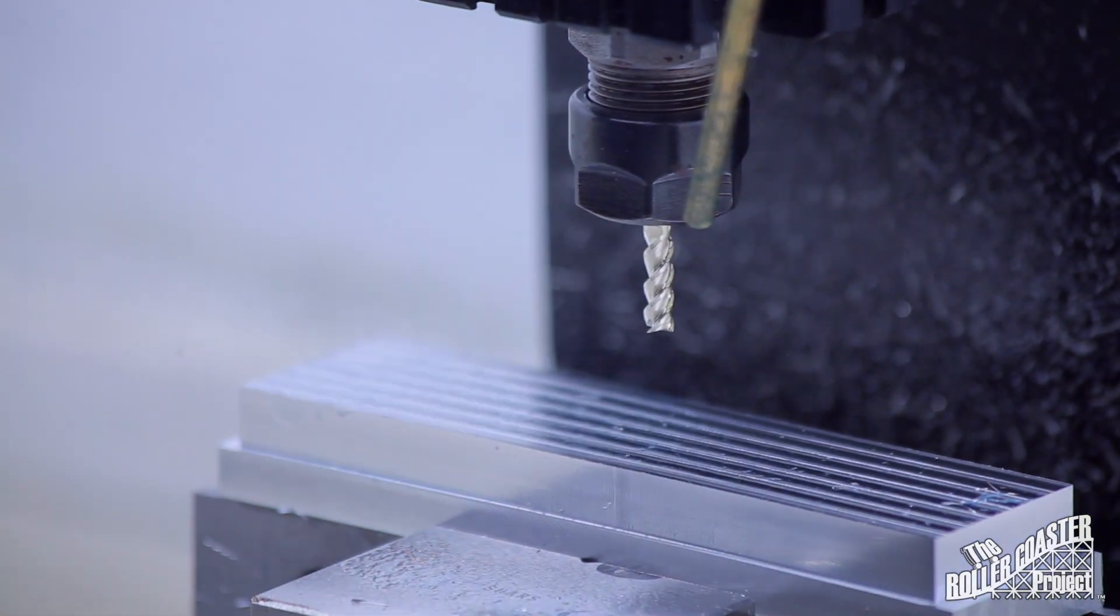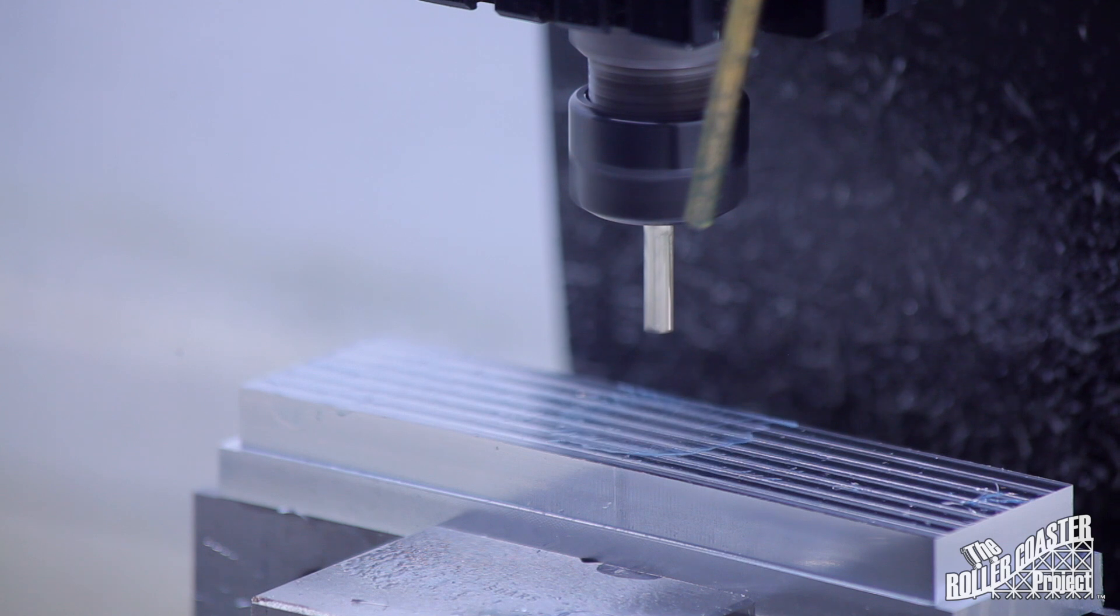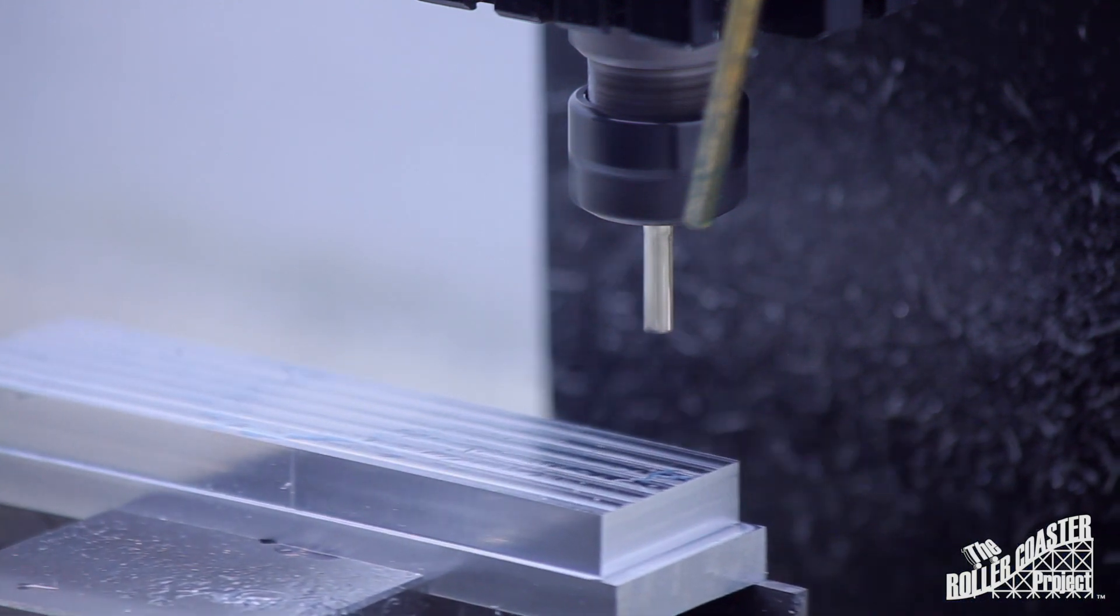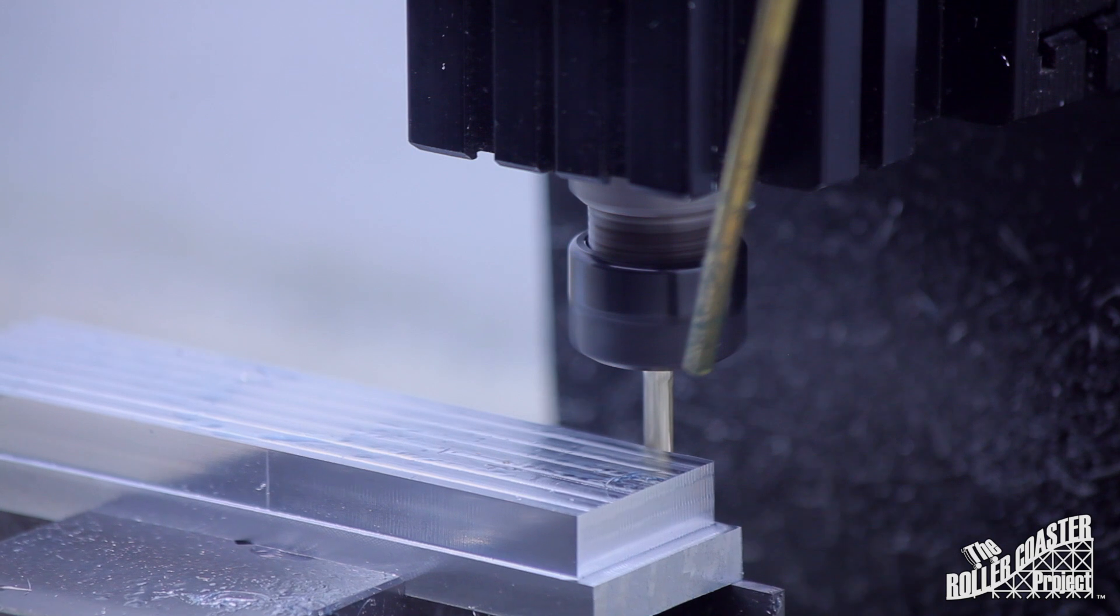Next I used my new three sixteenths end mill for a 2D adaptive cut to mill out the slots that will hold the vertical posts. Both of these end mills are linked below.